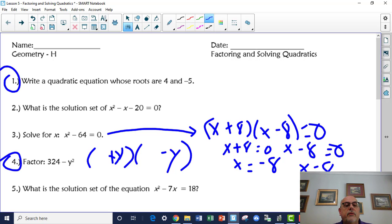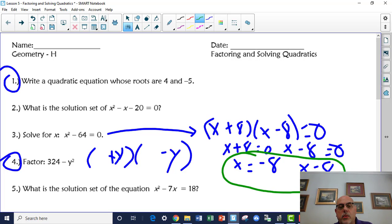On number 1, be careful with that one. That one, the roots are 4 and negative 5. So I am telling you on number 1, start with x equals 4 and x equals negative 5 and work backwards.